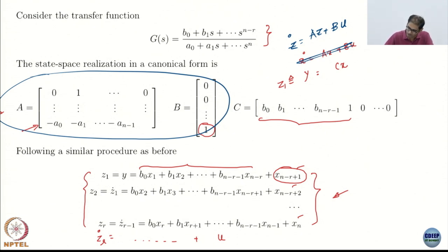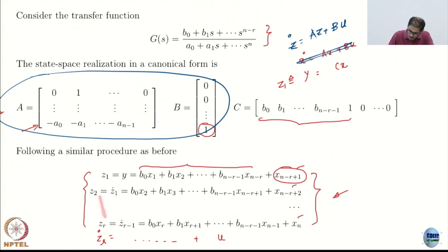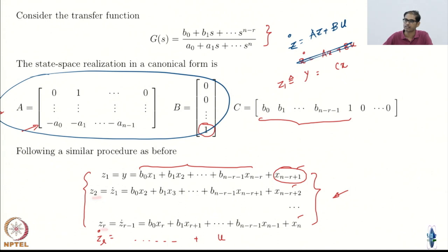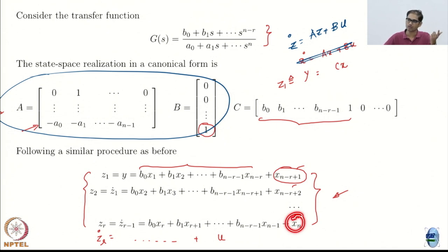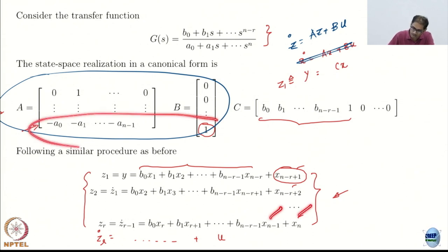If you keep taking the consecutive derivatives of y, you go to b0 x2, b1 x3, and so on all the way to Zr which is Z_{r minus 1} dot. You just match the indices — 2 becomes 2, 3 becomes r plus 1 and so on. Basically all you are doing is moving from the 2nd index to the rth index. The only important thing is this brings in x_n, and x_n dot contains the control.